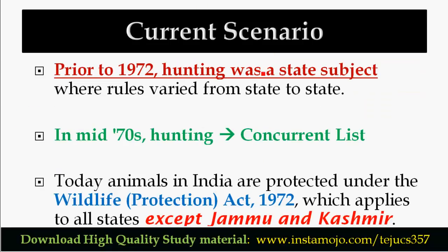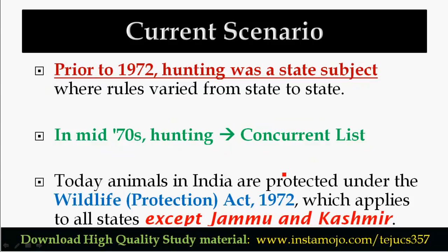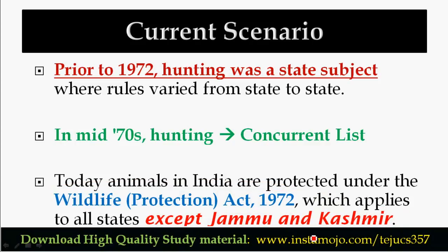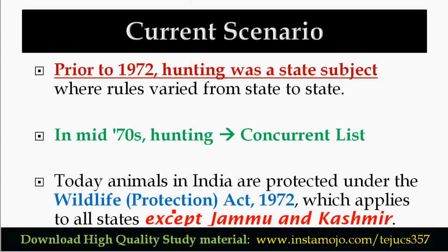In 1972, hunting became a state subject — meaning each state has its own rules with differences and variations. In the mid-1970s, around 1975–1976, hunting became a concurrent subject. Now we have the Wildlife Protection Act 1972, applicable except in Jammu and Kashmir. Through hunting and poaching, many species became extinct. Leopards and tigers declined through poaching, so wildlife protection is very important.